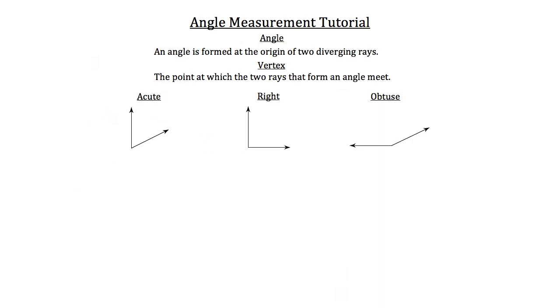So let's talk a little bit about the acute angle. An acute angle is any angle whose measure is less than 90 degrees. And a right angle is an angle whose measure is exactly 90 degrees. Lastly, the obtuse angle is an angle whose measure is greater than 90 degrees.